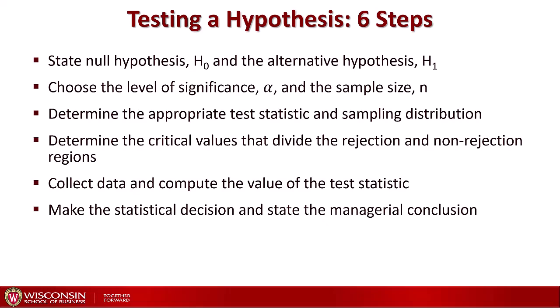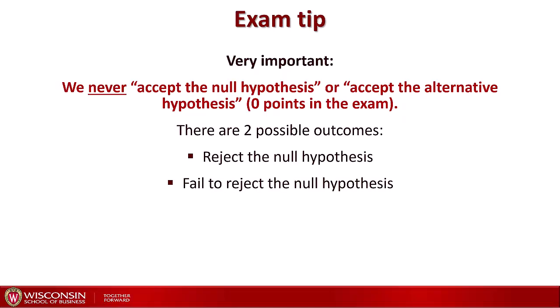Then we determine the critical values that divide the rejection and the non-rejection regions for the sample statistic — we will talk about exactly what those mean in great detail in this video. Then we collect the data based on the sample size we determined before and compute the value for the test statistic in our sample. Finally, we compare the test statistic we obtained with what we expect to see and make the statistical decision: whether we reject the null hypothesis or fail to reject it. Then we state the managerial conclusion.